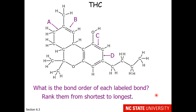Here is a compound much in the media — this is THC — and you notice that it does definitely have a benzene ring component to it. We want to know the bond order of each labeled bond and rank them from shortest to longest. Looking at bond A: even though it is in a six-membered ring, it doesn't have the alternating double-single-double structure, so the bond order of A will be as it appears — bond order 1.